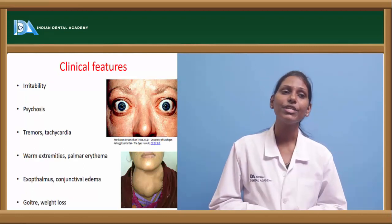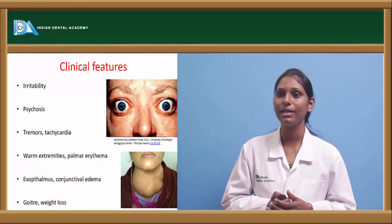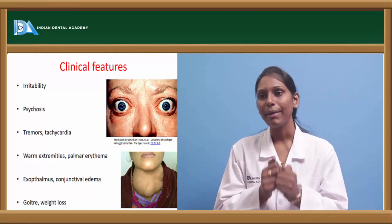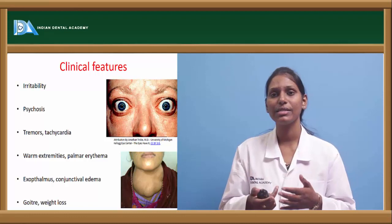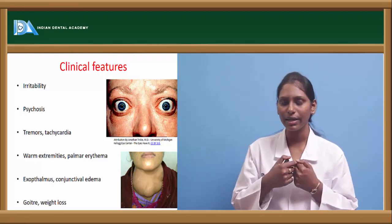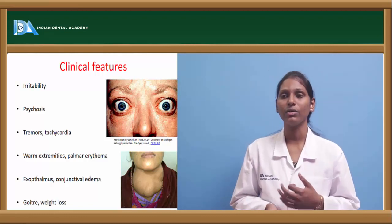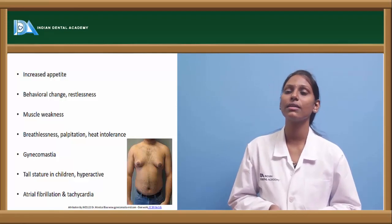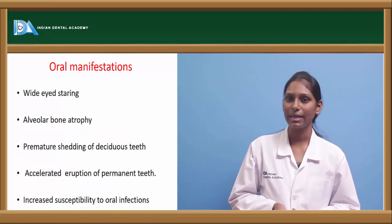The most common clinical features of hyperthyroidism include irritability, proptosis of the eye or exophthalmos, conjunctival edema, tremors and tachycardia, psychosis, warm extremities, and palmar erythema. Patients lose weight despite excessive hunger, and goiter may be seen. Other features include increased appetite, behavioral change or restlessness, muscle weakness, gynecomastia, breathlessness, palpitations, heat intolerance, short stature in children, hyperactive children, and atrial fibrillation or tachycardia.